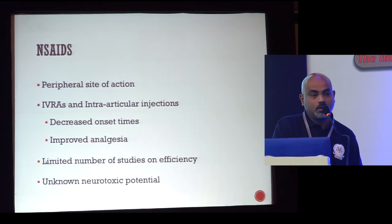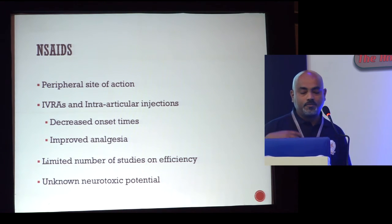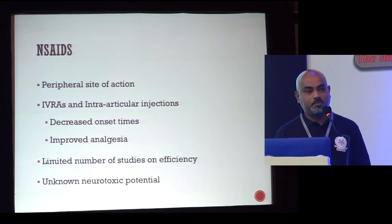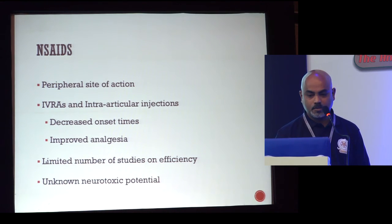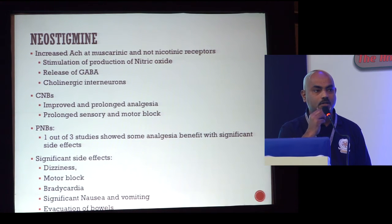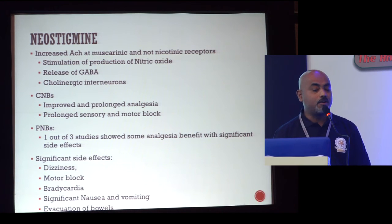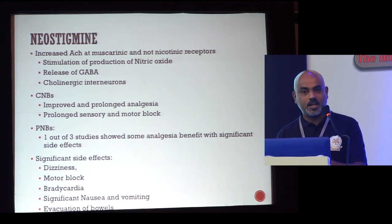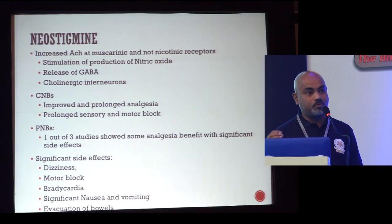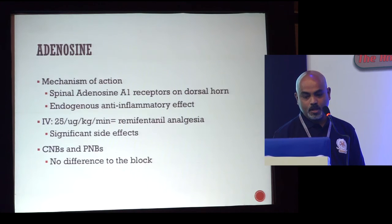Non-steroidals have been used based on the concept of an inflammatory soup — many inflammatory products like prostaglandins are released in the periphery, and adding NSAIDs tries to counteract that effect. They have been used in Bier's block and intra-articular injections, showing decreased onset times and improved analgesia, but there are very limited studies. Neostigmine — there are quite a few studies, including from India. The onset is better, and duration of motor block is better, but the problems are quite significant. Adenosine has also got some effects, but again there was no convincing evidence for it.